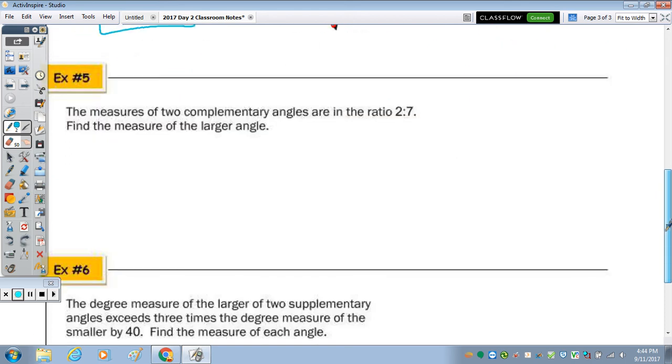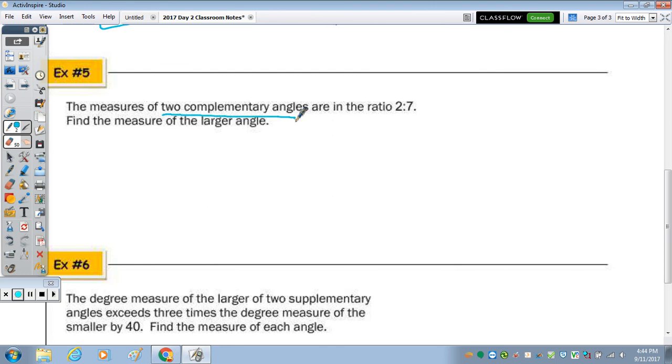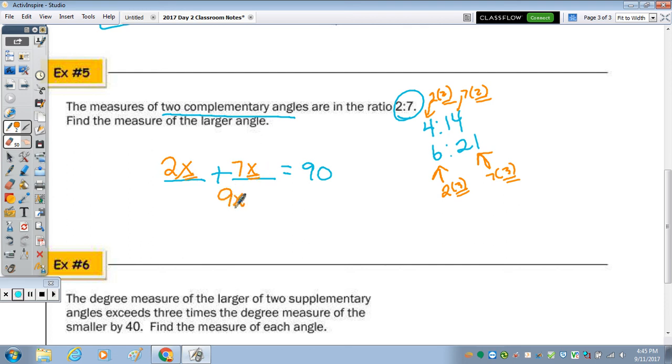Number 5 says the measure of two complementary angles. Well, as soon as I see that, I know that something plus something is 90. So if they're in the ratio 2 to 7, an equivalent ratio would be, like if you double them, 4 to 14, triple them, 6 to 21. And the two numbers in that ratio have to add up to 90, and those do not. So you can keep going and guessing and checking, but this was just simply, this one was 2 times 2, 7 times 2, and then this one was 2 times 3, 3 being the factor, and 7 times 3. So the way you can set it up is 2x and 7x, so you can find that factor. So then you add 9x equals 90, divide by 9, and x is 10. Find the measure of the larger angle, so that would be 7 times 10, which is 70 degrees.